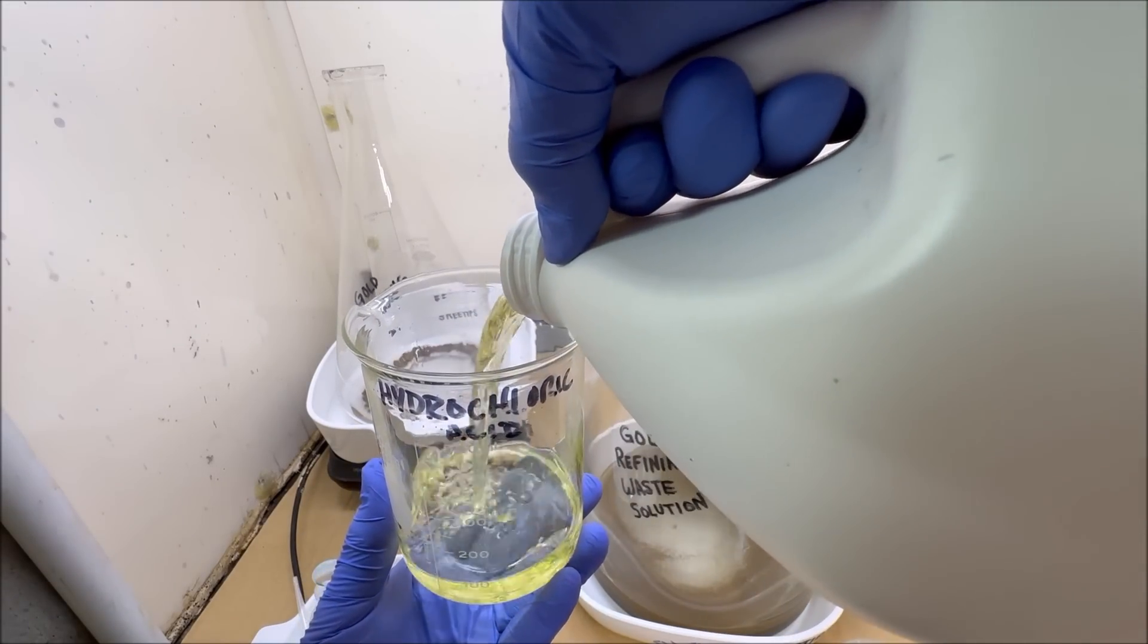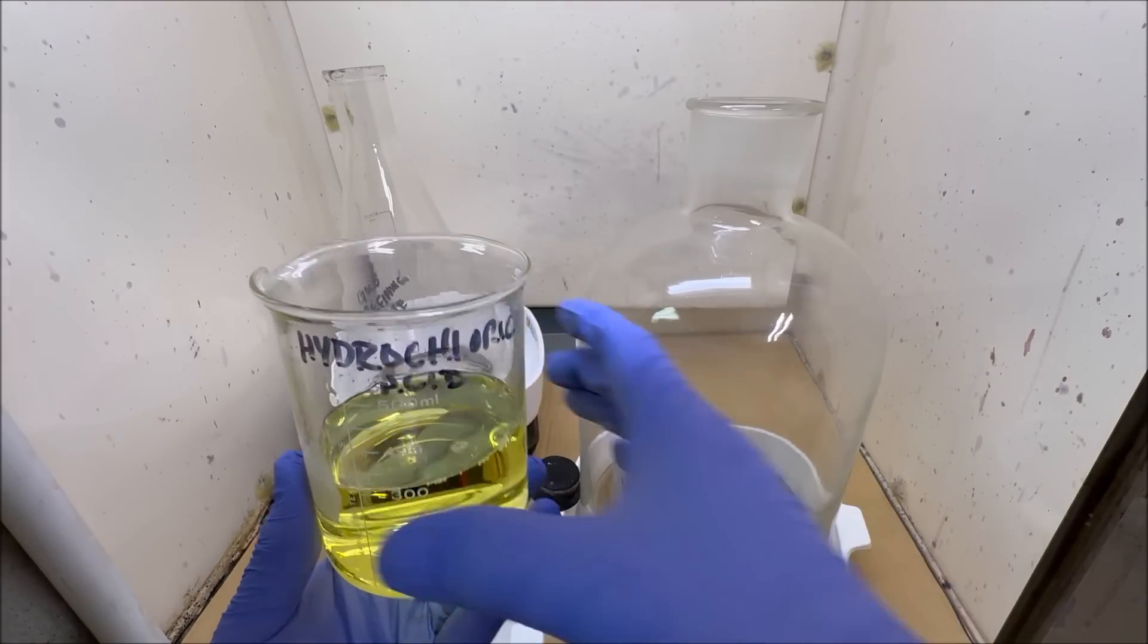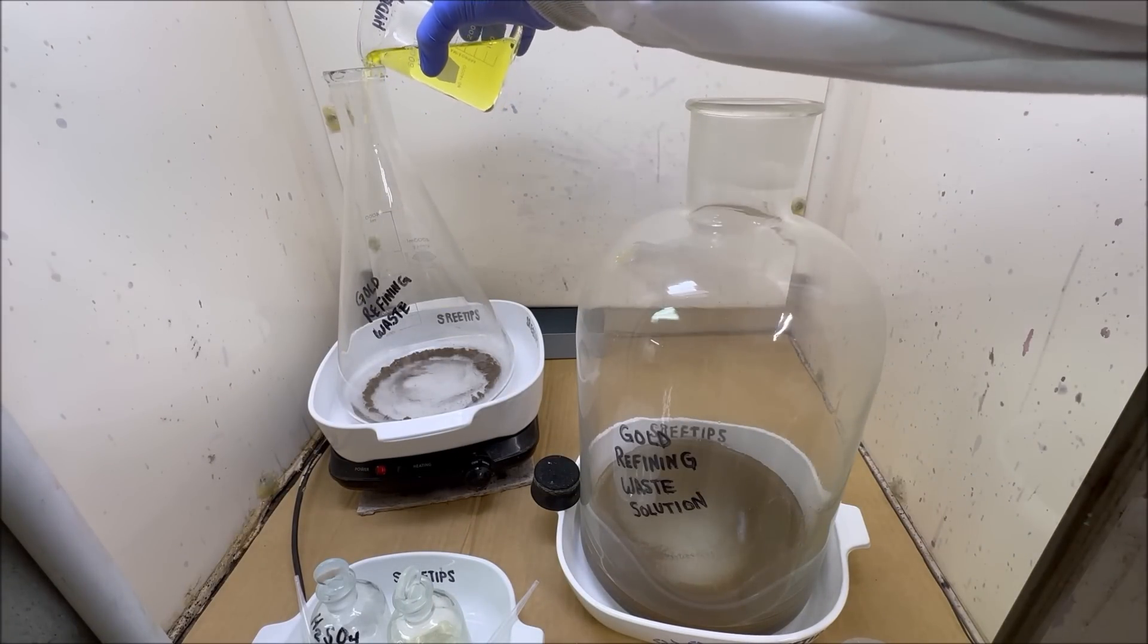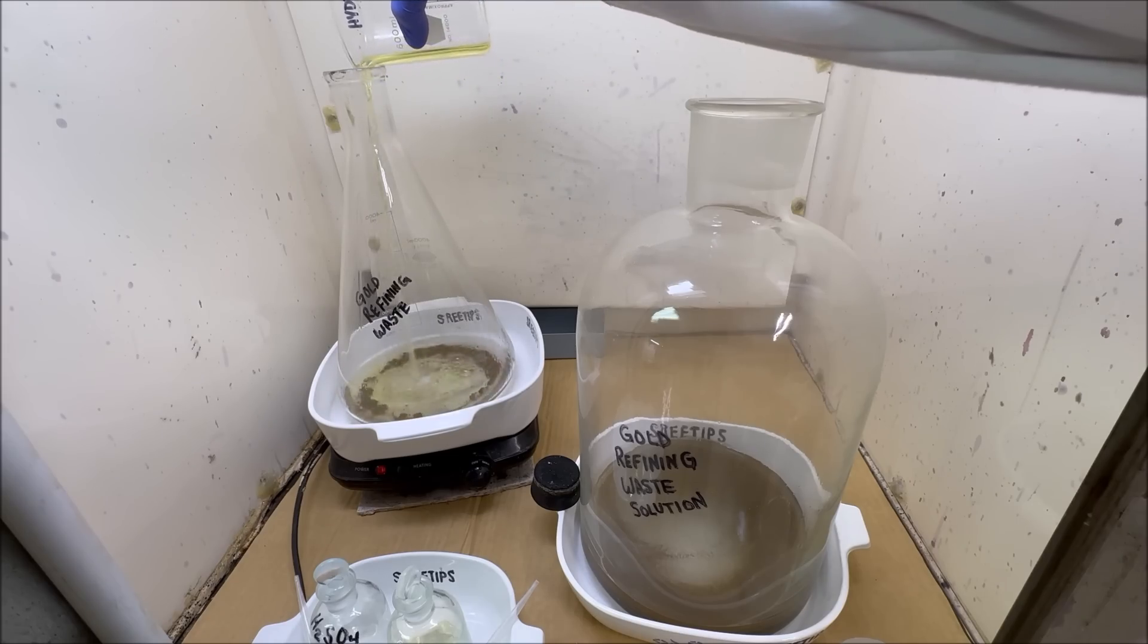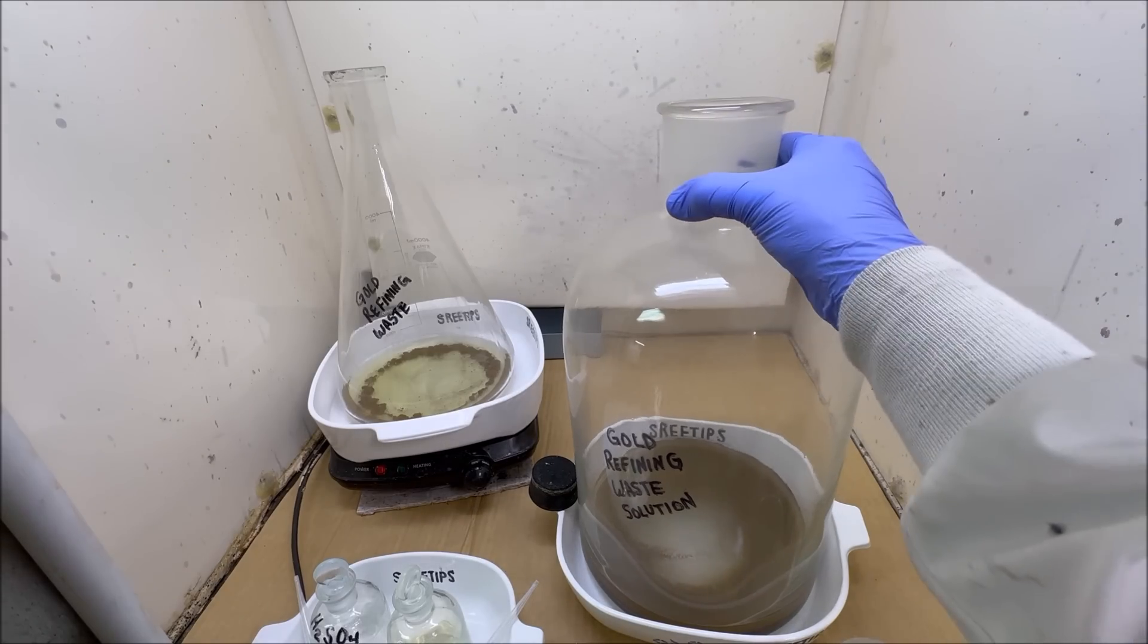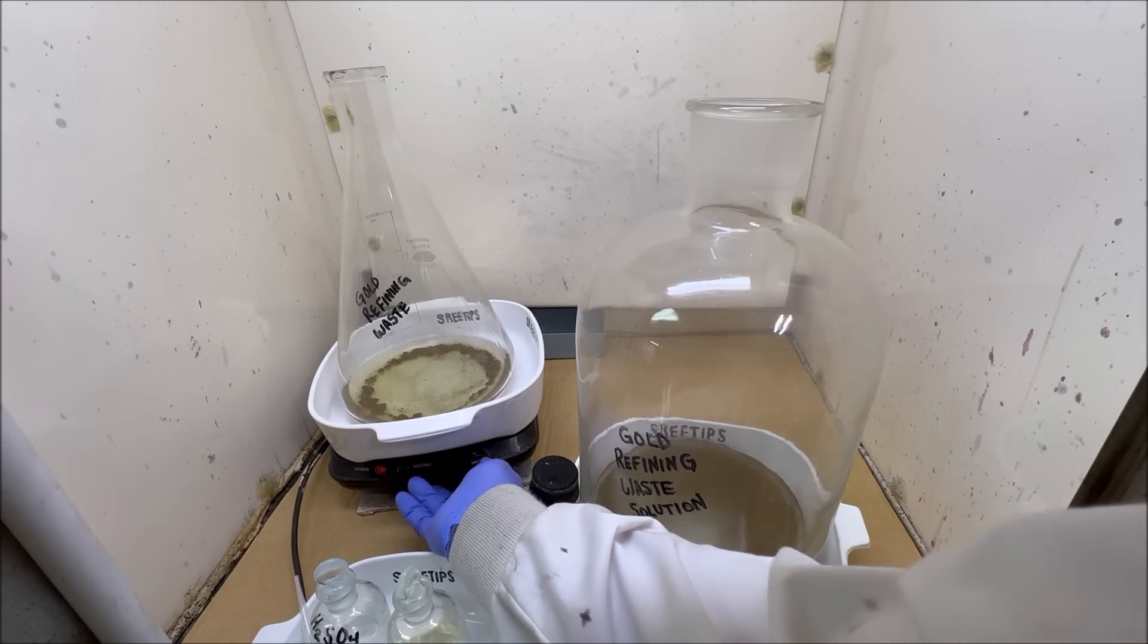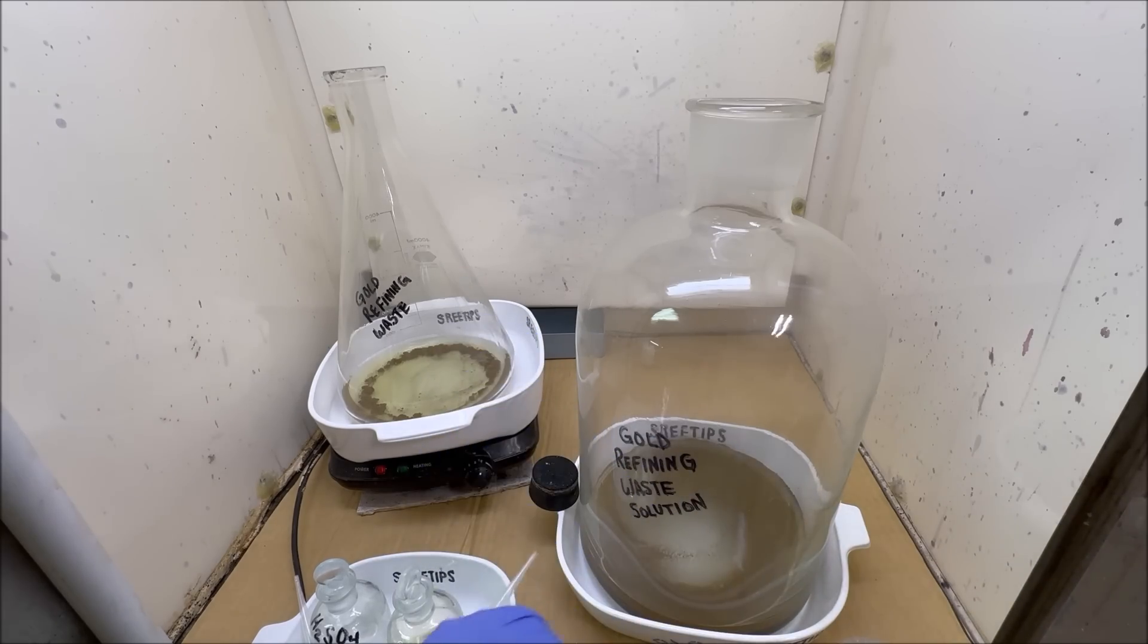What happens is a little bit of the gold gets poured off every time I do a rinse and it accumulates in these containers. Today we're going to try to recover the pure gold out of these waste containers. This container is not heat resistant glass, this one back here is, so I'll add a little bit of heat to this one in the back.